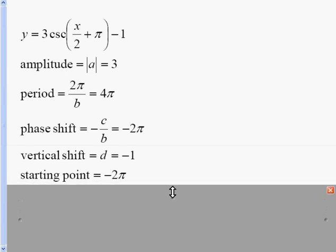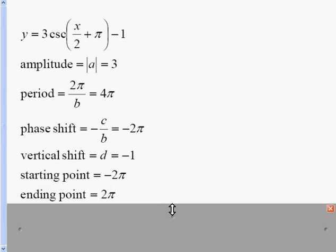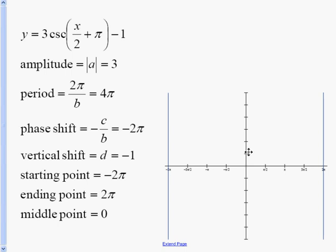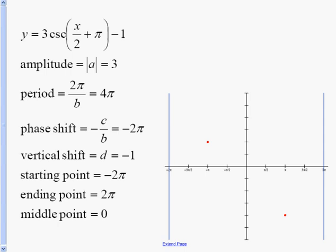Our starting point is our phase shift, which is negative 2π. We add the period to get 2π as the ending point, and cut that in half to get 0 as the middle point. At our starting, middle, and ending points — negative 2π, 0, and 2π — we have asymptotes. Our amplitude is 3 and it's positive, so halfway between the first and second asymptotes we're up at 3. Then between the second and third asymptotes we're down at negative 3. We draw our curves, and there's that cosecant graph.